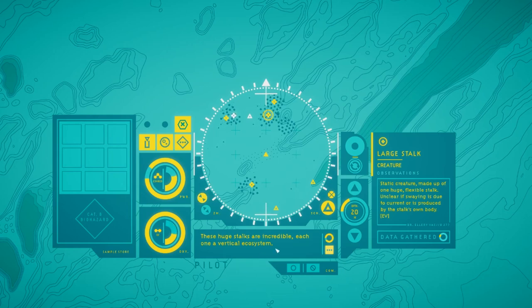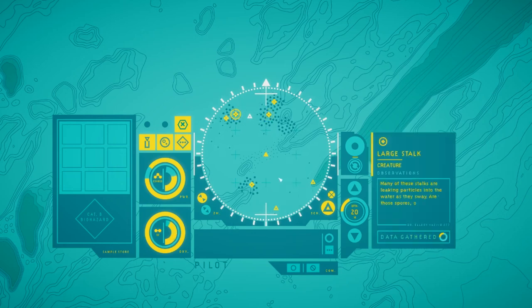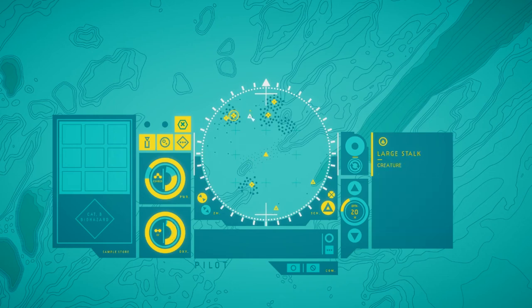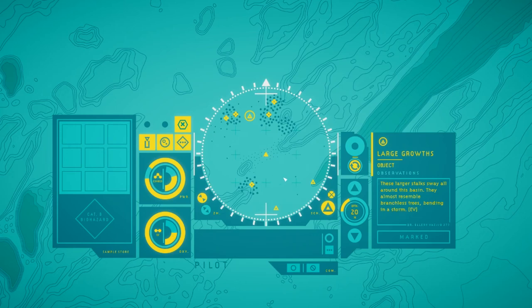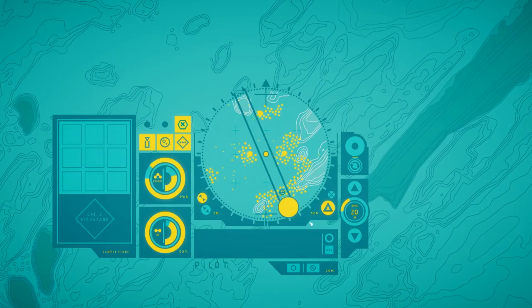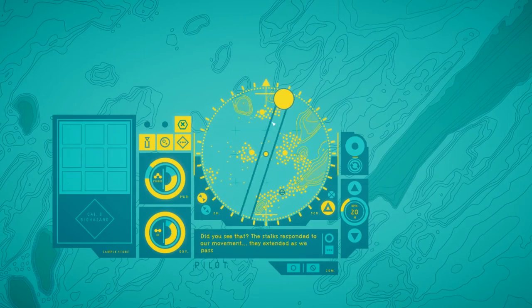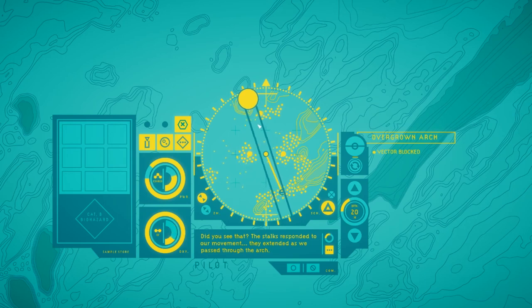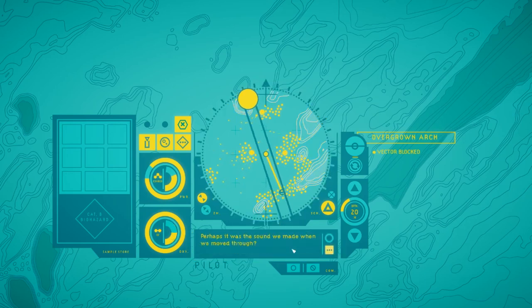Seed stalks are incredible. Each one a vertical ecosystem. They're leaking spores into the water as fruiting bodies attach to their skin bloom. Static creature made of one huge, flexible stalk. Unclear if swaying is due to current or produced by the stalk's own body. Interesting. Why do these stalks are leaking particles into the water as they sway? Are they spores or something else? Our stalks sway all around the basin. Almost resemble branchless trees bending in a storm. Whoa. Did you see that? The stalks responded to our movement. They extended as we passed through the arch. And they just trapped us in? Perhaps there was a sound we made when we moved through? We should be careful not to get trapped here. The suit's power capacity is limited. That's spooky.